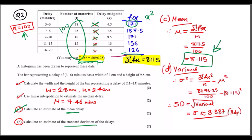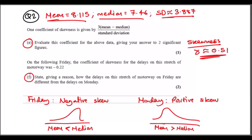For part (d), find the standard deviation by computing the variance first, since variance is the square of standard deviation. The variance formula uses the sum of fx² over n, minus the mean squared. The sum of fx² was provided in the question. Put everything into the calculator, then take the square root to get the standard deviation ≈ 3.887.